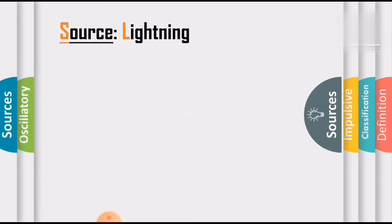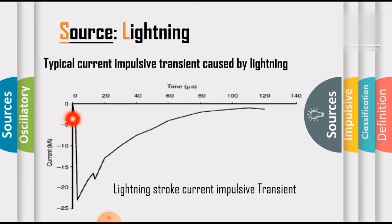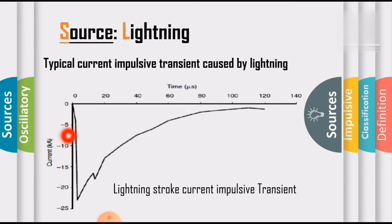The sources for these impulsive transients include lightning. This waveform shows the typical current impulsive transient caused by lightning. This plot is a representation of the lightning stroke current impulsive transient. On the x-axis we are considering time, and on the y-axis we are considering current. Observing the plot between time and current, the curve is produced in a particular fashion — both in the positive and negative directions.